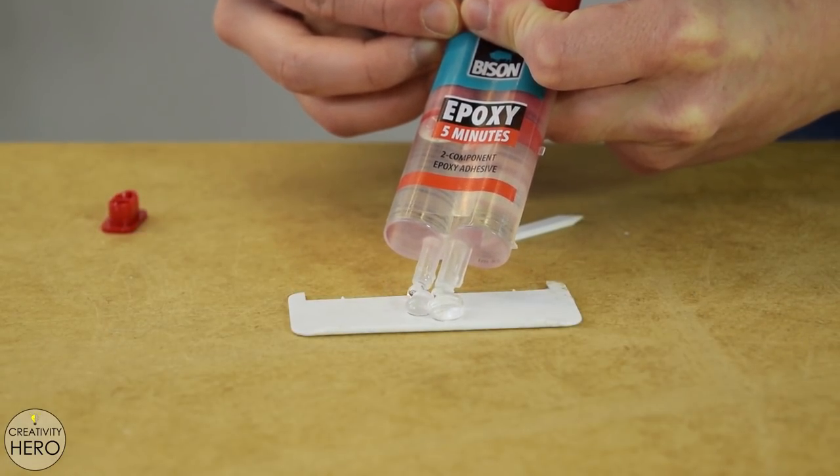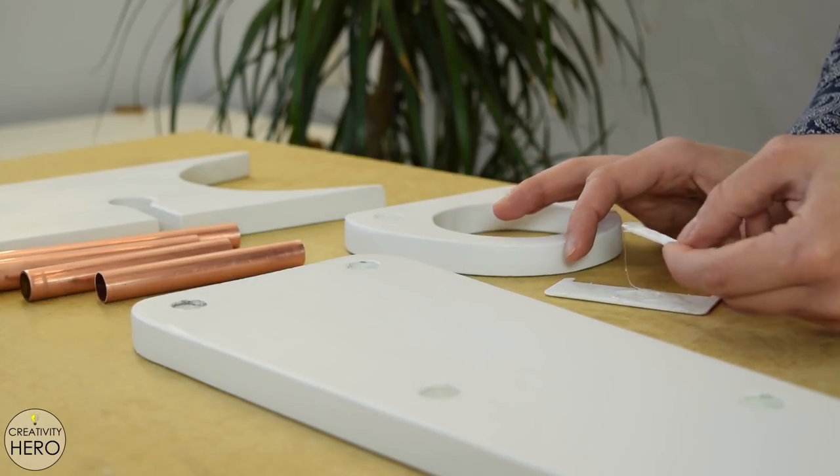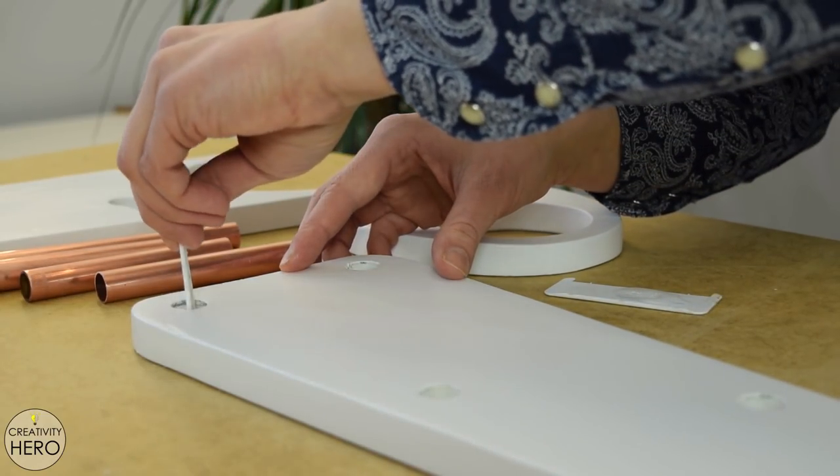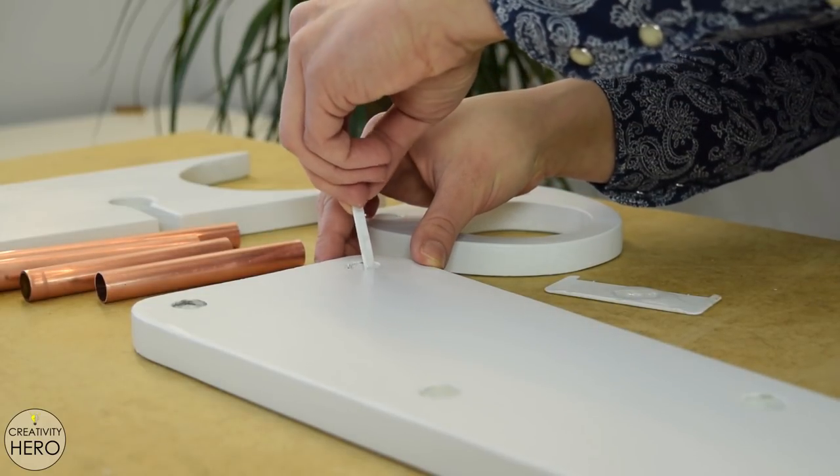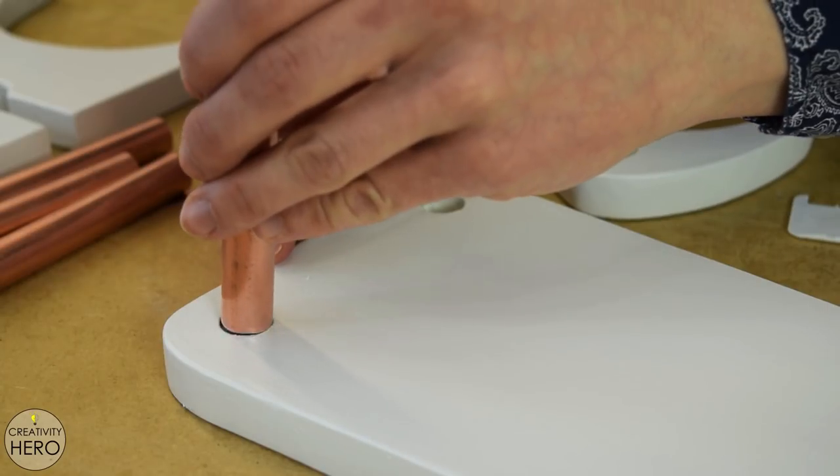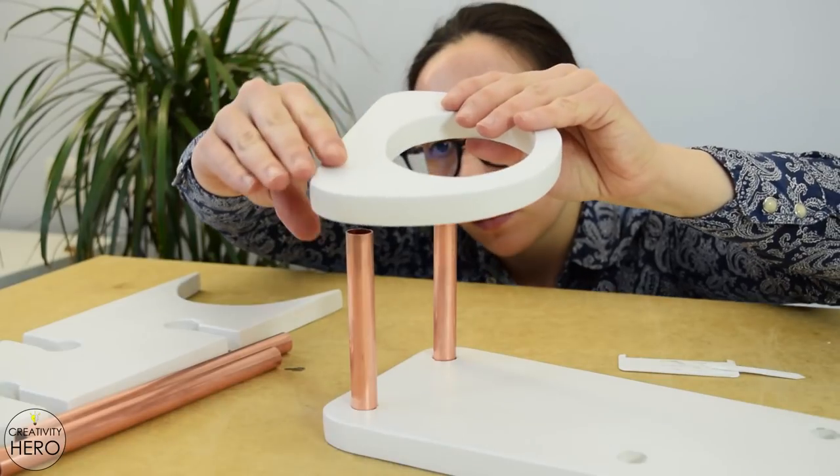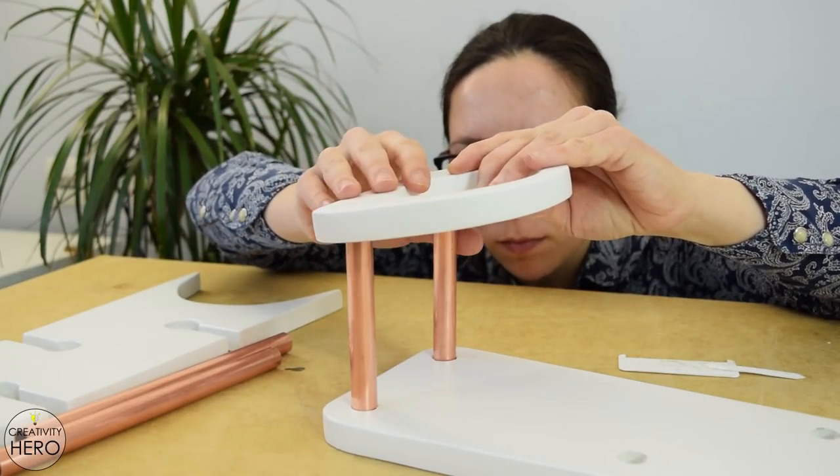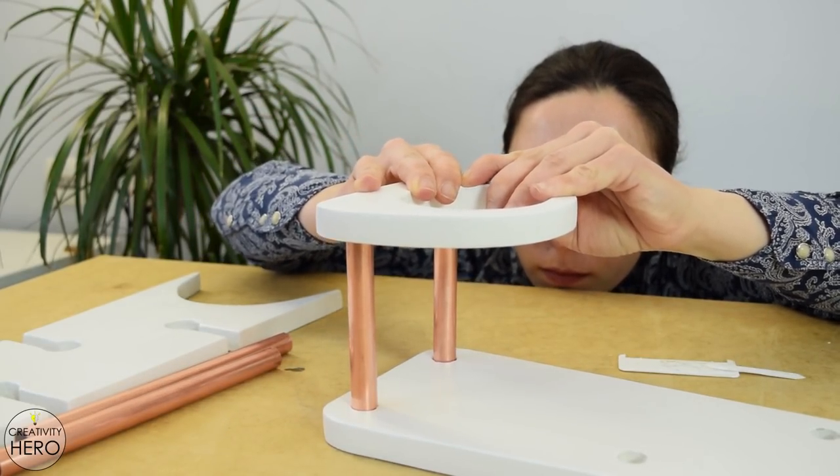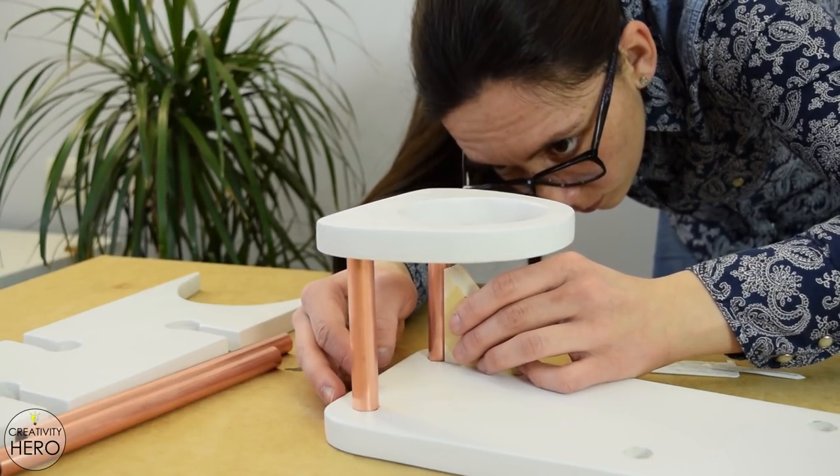I'm using epoxy to secure the copper pipes into the holes. To keep everything clean I applied epoxy into the holes and then inserted the pipes. The epoxy will make a strong connection between the copper and the wood. I made sure the pipes are perpendicular to the wood and left them to dry out.